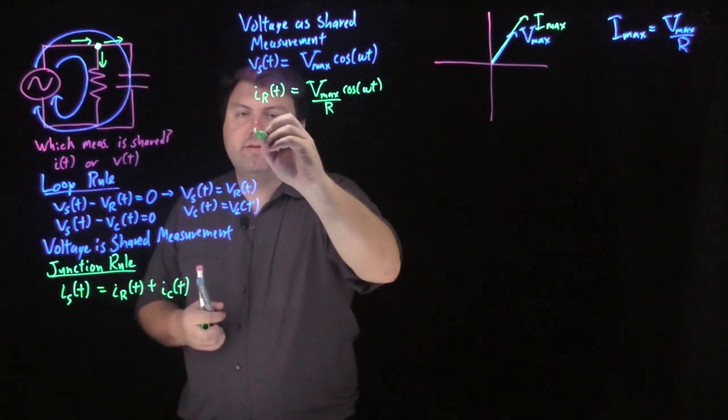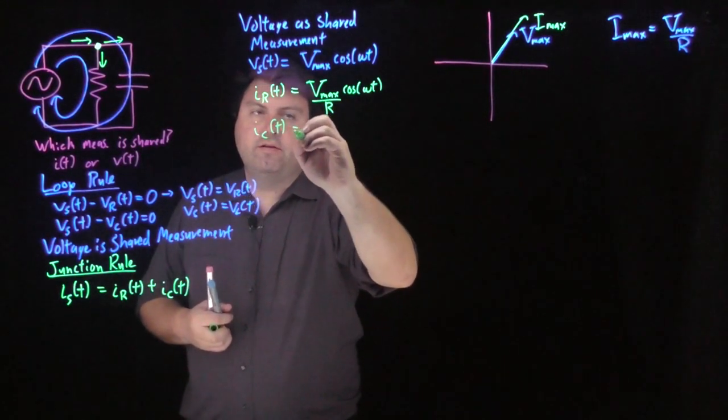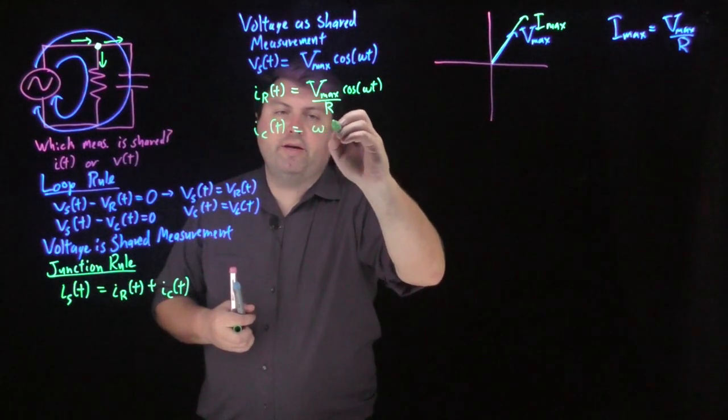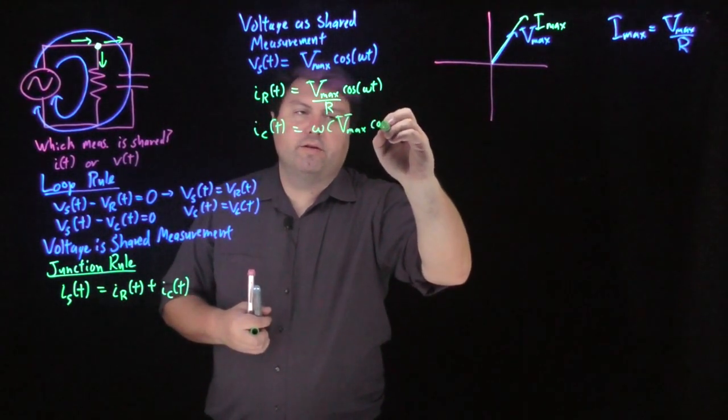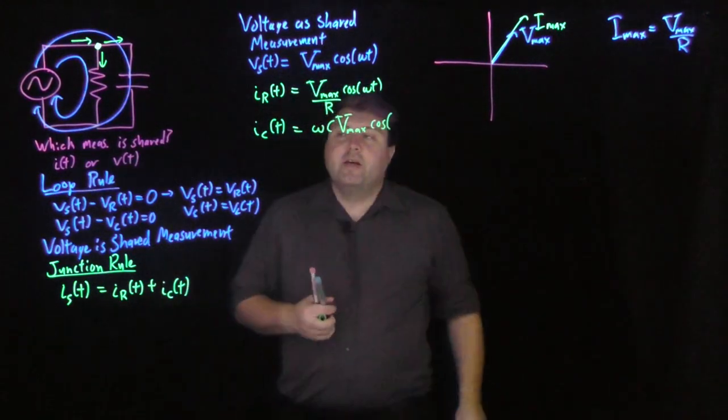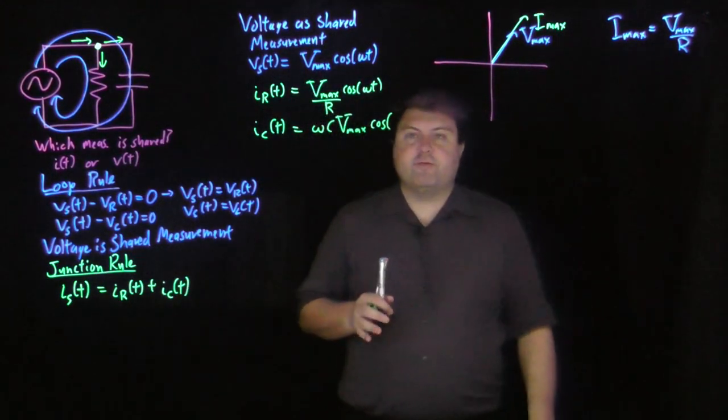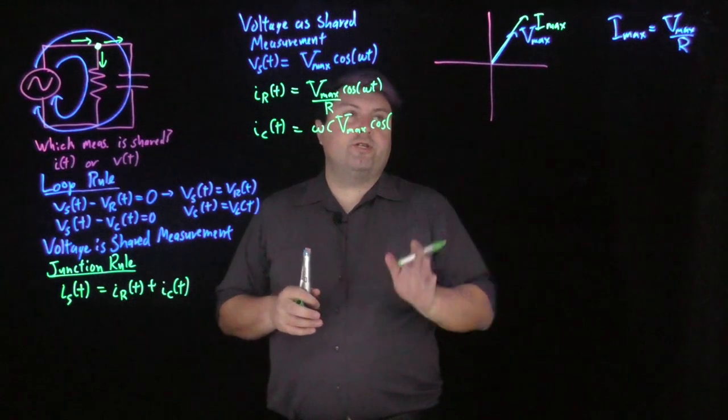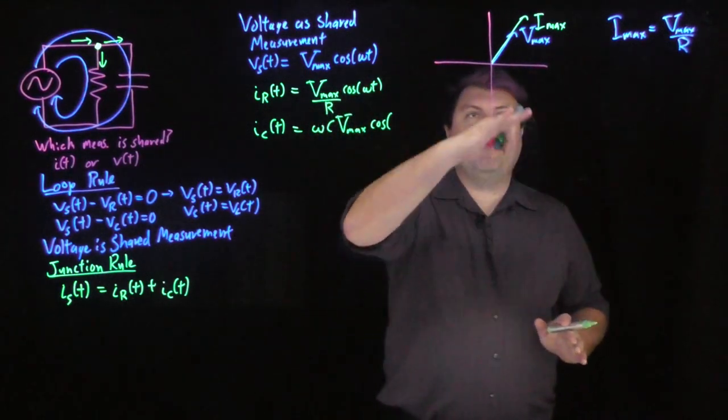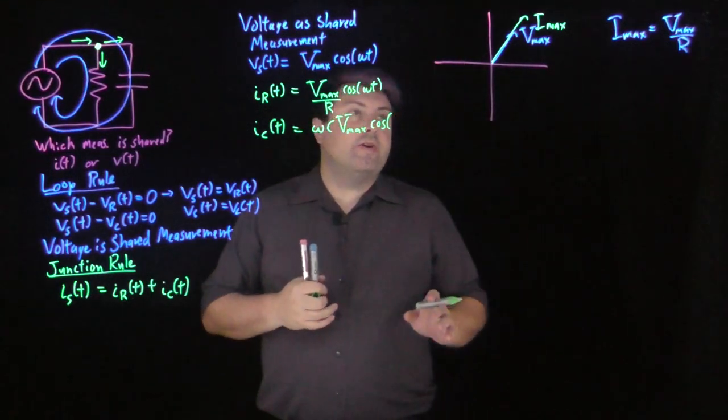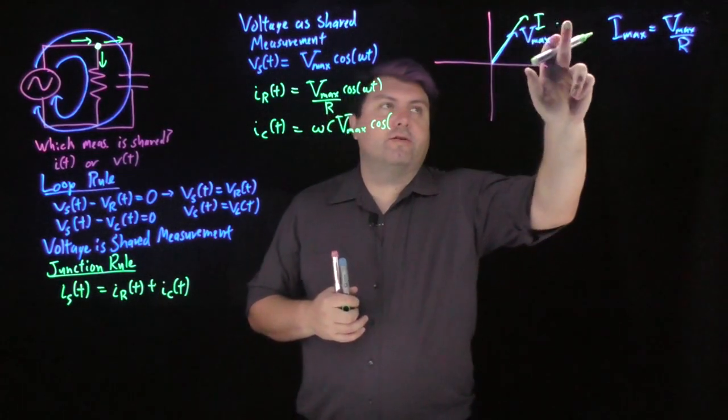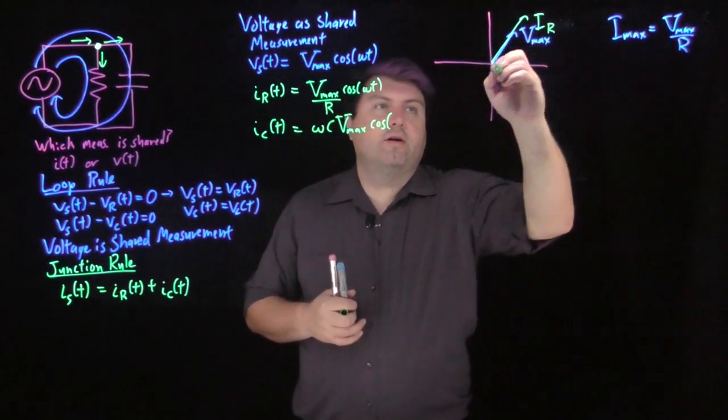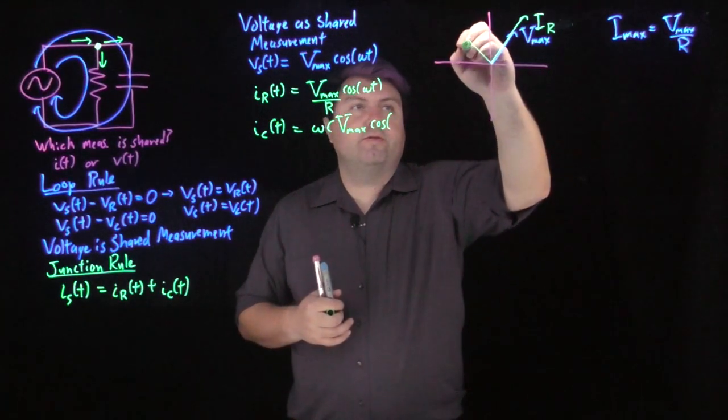And then our capacitor is going to be omega C capital Vmax cosine. And we saw in previous times, right, that the voltage of the capacitor lagged behind the current. So now we'll have the current of the capacitor, sorry, this is I sub R, the current of the capacitor is going to lead.